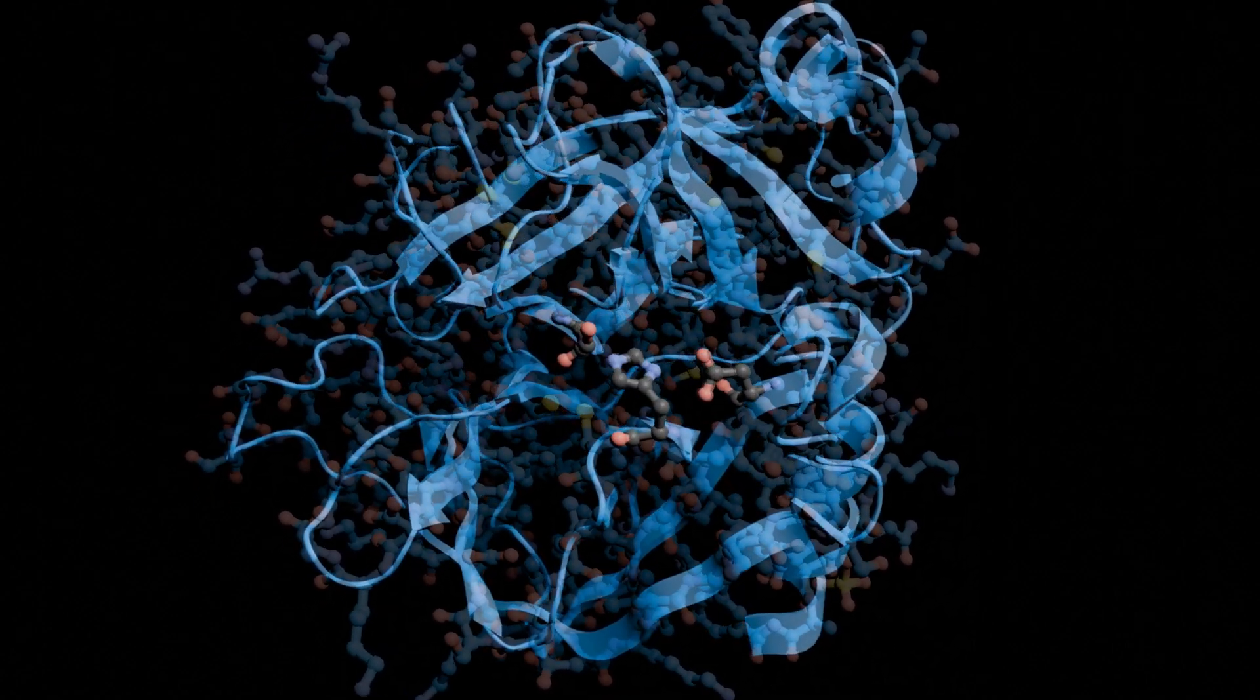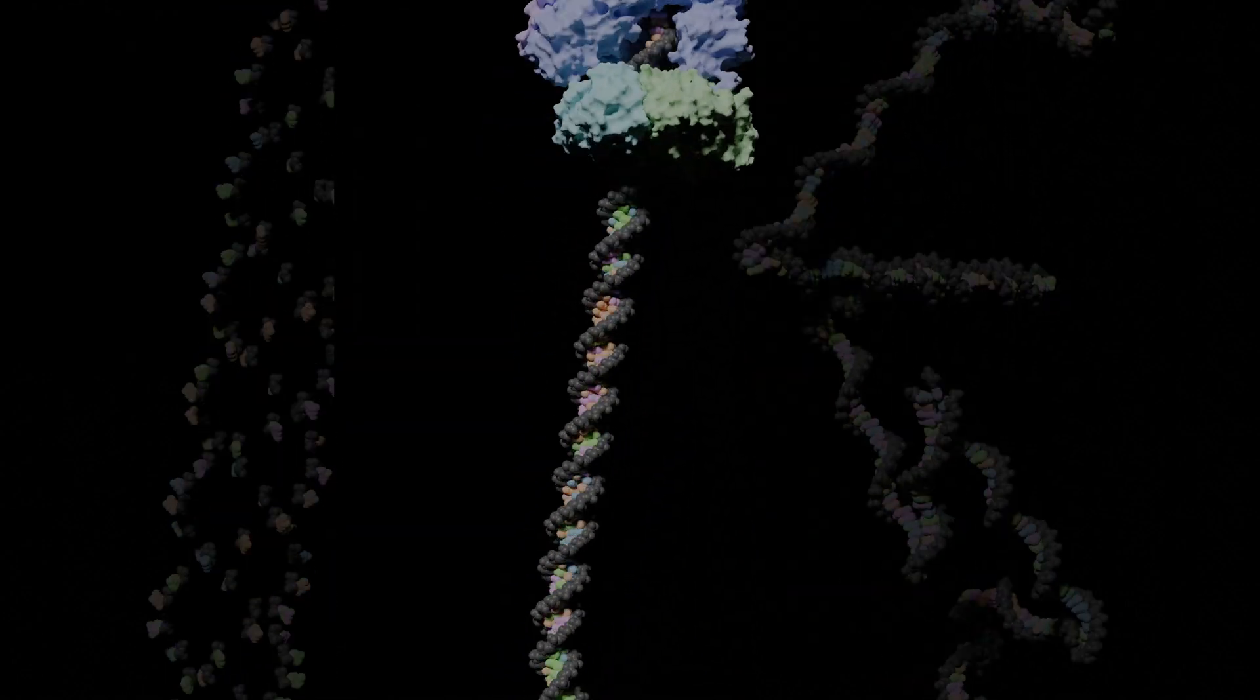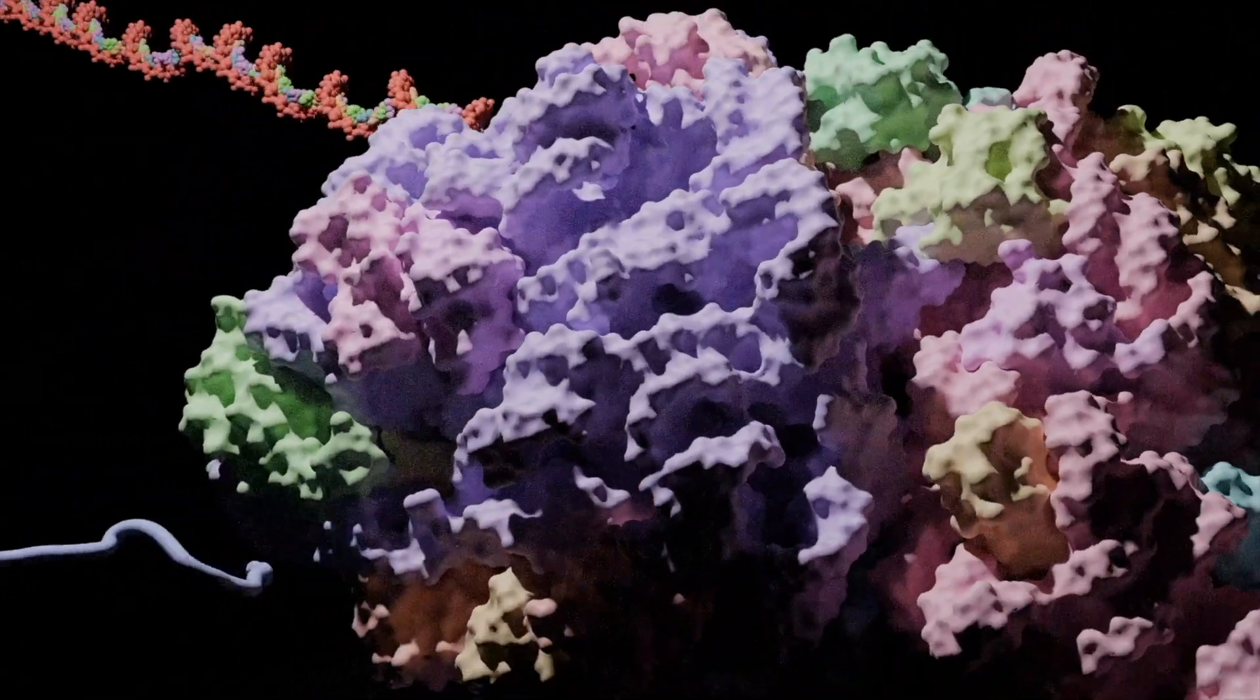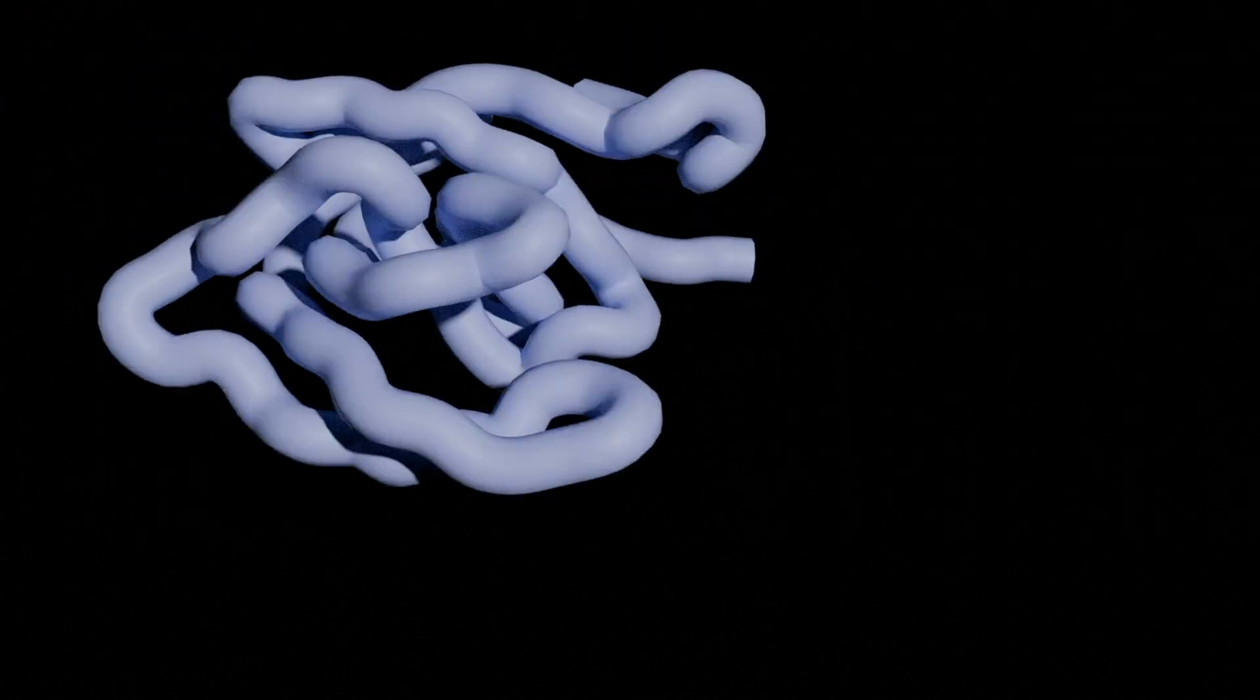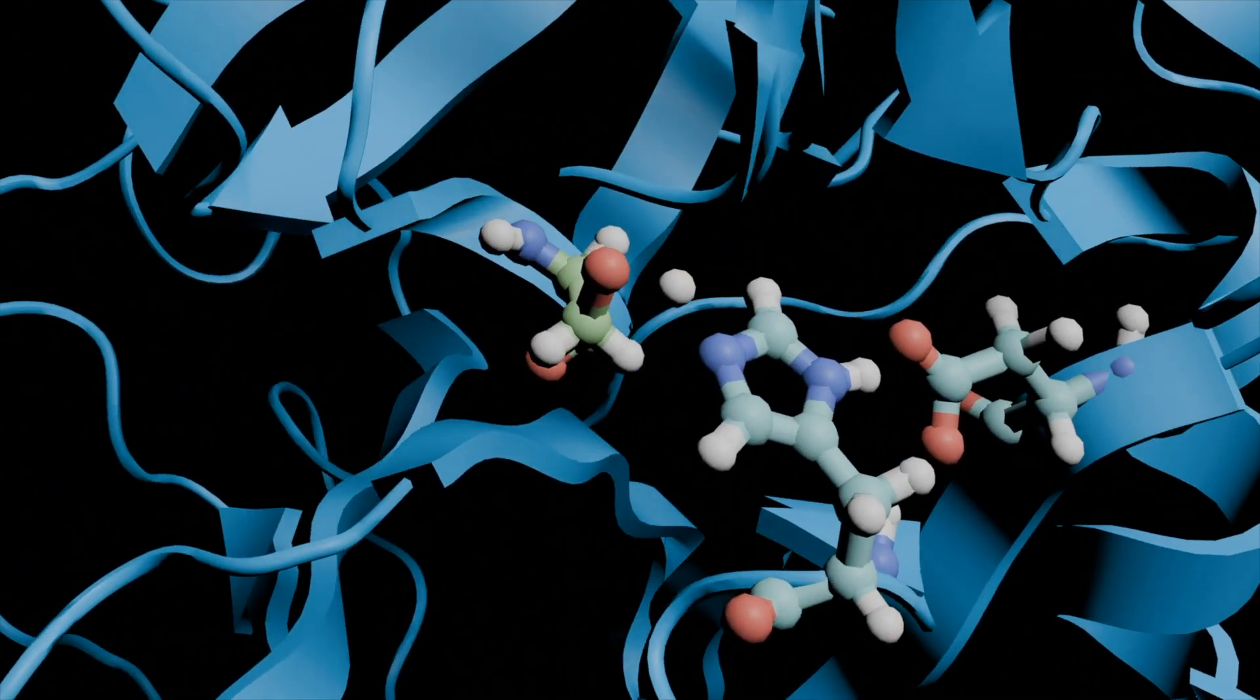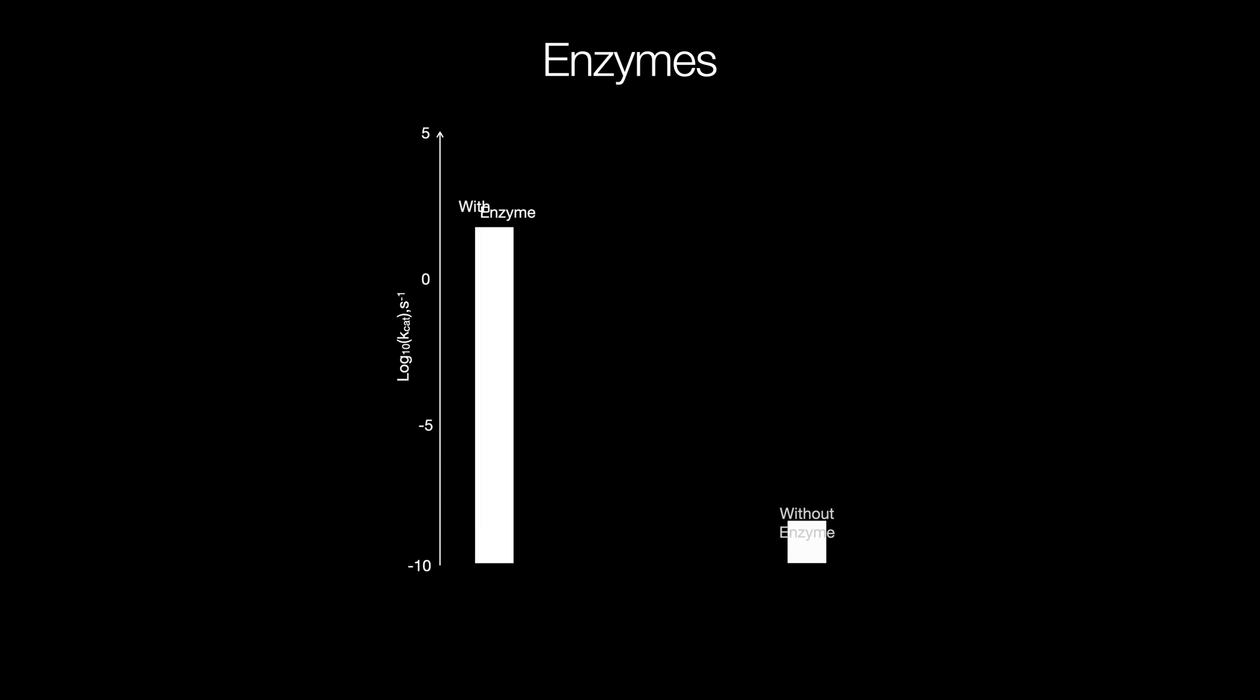Chymotrypsin will give you the key intuitions you need to understand molecular machines. In particular, you'll understand how it can force specific reactions to happen, how this wonky noodle shape came to be and why it is essential for the enzyme's ability to function, and you'll learn about the clever strategies it employs to boost reaction speeds by a billion fold.